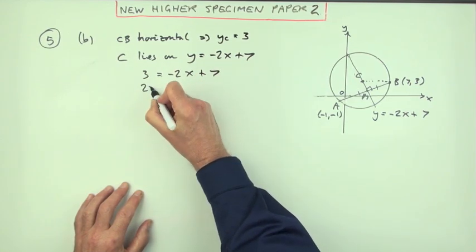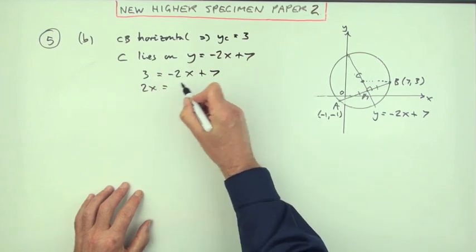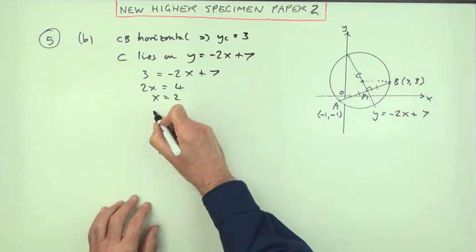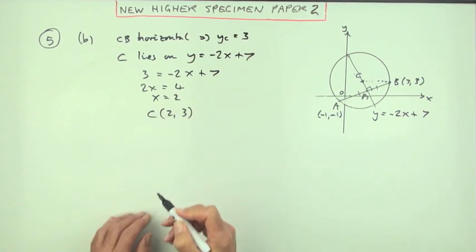Which means C is the point (2, 3). I knew the y-coordinate, I could work out the x-coordinate.